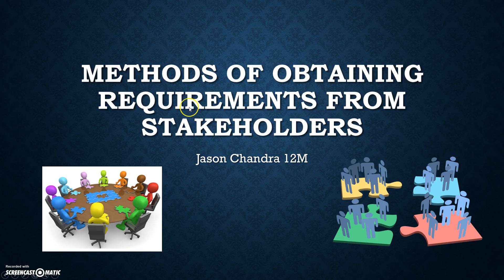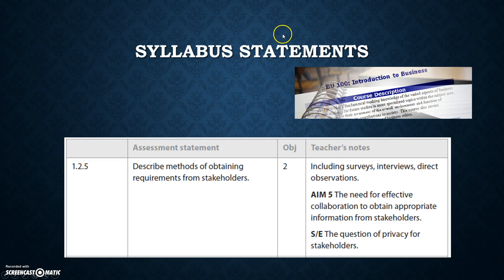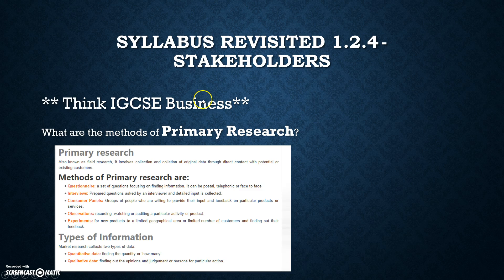Hello everyone, this is a video tutorial on methods of obtaining requirements from stakeholders. We revisit the syllabus statement — this is 1.2.5, describe methods of obtaining requirements from stakeholders. Looking back to 1.2.4, which covers stakeholders, we can link this to IGCSE Business, and the methods of primary research, also known as field research, which involves collection and collation of original data through direct contact with potential or existing customers.